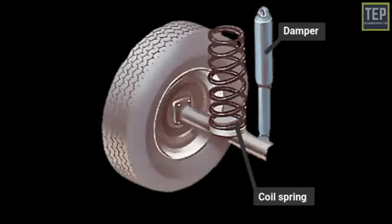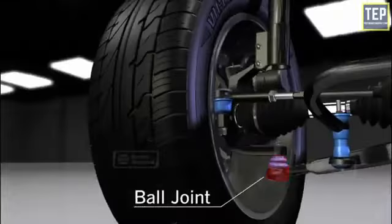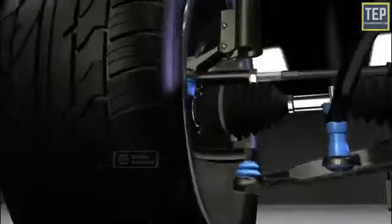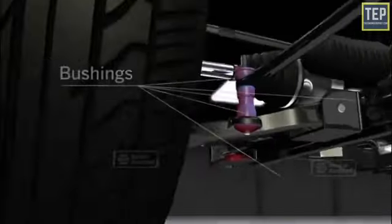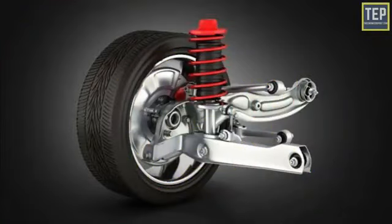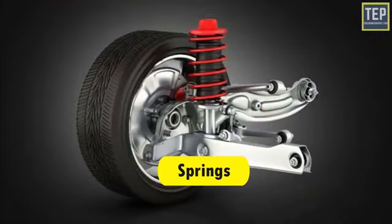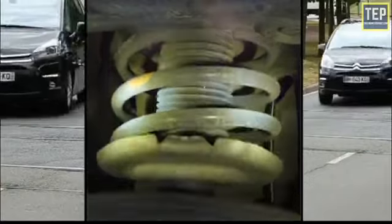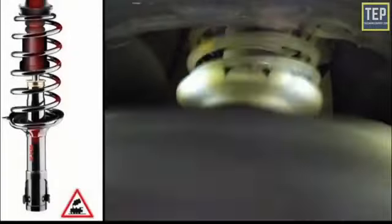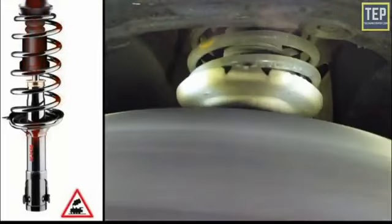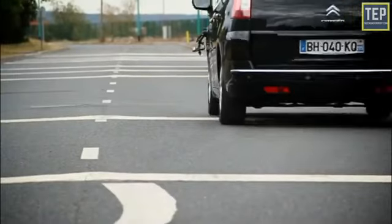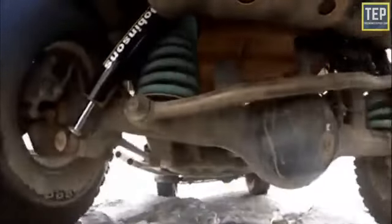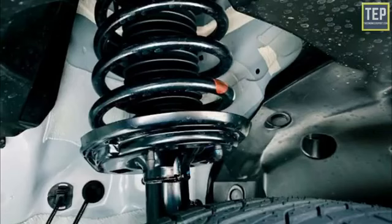Suspension comes with two basic components: springs and dampers, along with ball joints, tie rods, control arms, sway bars, bushings, and struts. Springs act as reservoirs of energy. When the vehicle passes over irregularities in the road, it compresses the spring. This energy is released when the spring expands, and with the help of dampers, the energy is converted into heat. The spring absorbs the shock and avoids transferring it to the vehicle frame.